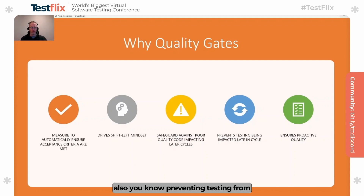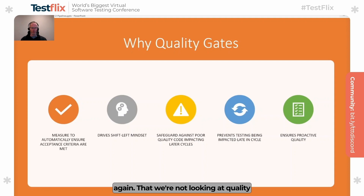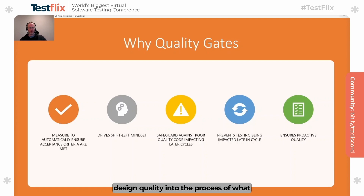We're thereby also preventing testing from being impacted late in the cycle. The testers don't need to worry about that end-of-sprint crunch or end-of-cycle crunch, because everything is really starting to be tested early on. And it ensures that we have proactive quality — that we're not looking at quality in retrospect, but we're trying to design quality into the process of what it is that we're trying to deliver as an organization.